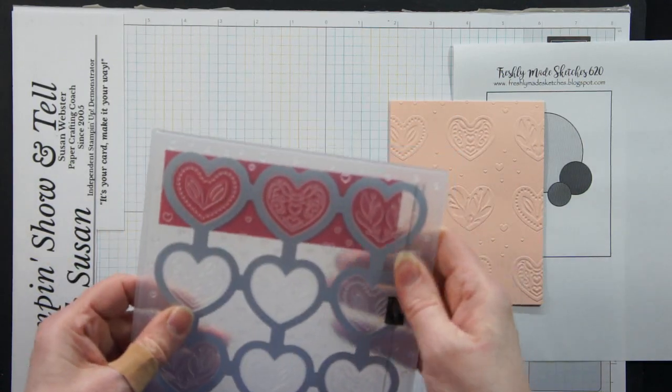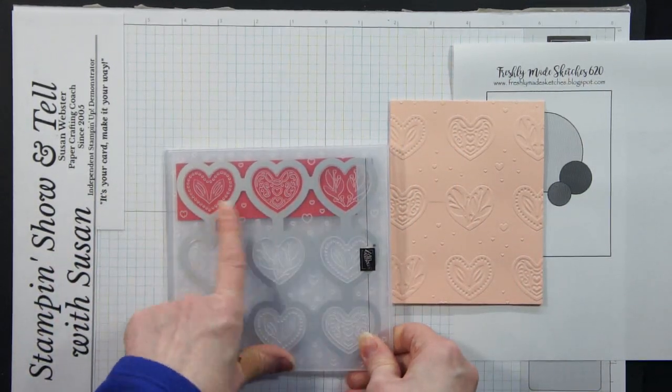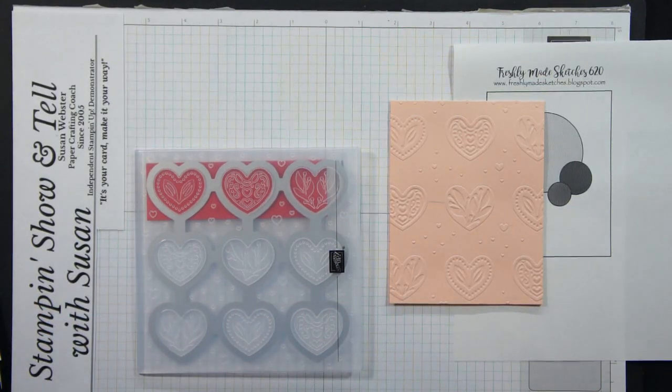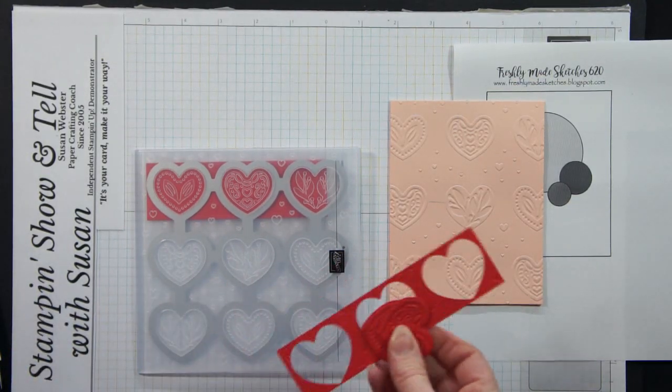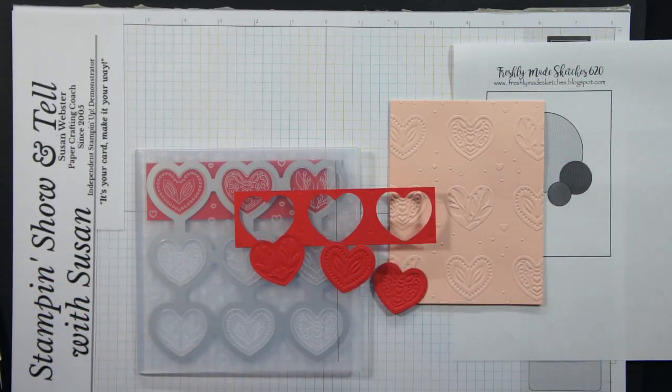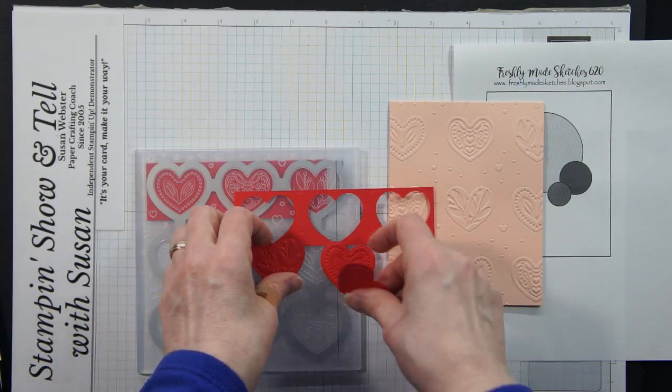Then I went to my embossing machine, my die cutting machine, and I ran that through and what I came back with was three embossed and die cut hearts. So that's kind of cool. That's how those hybrid folders work.